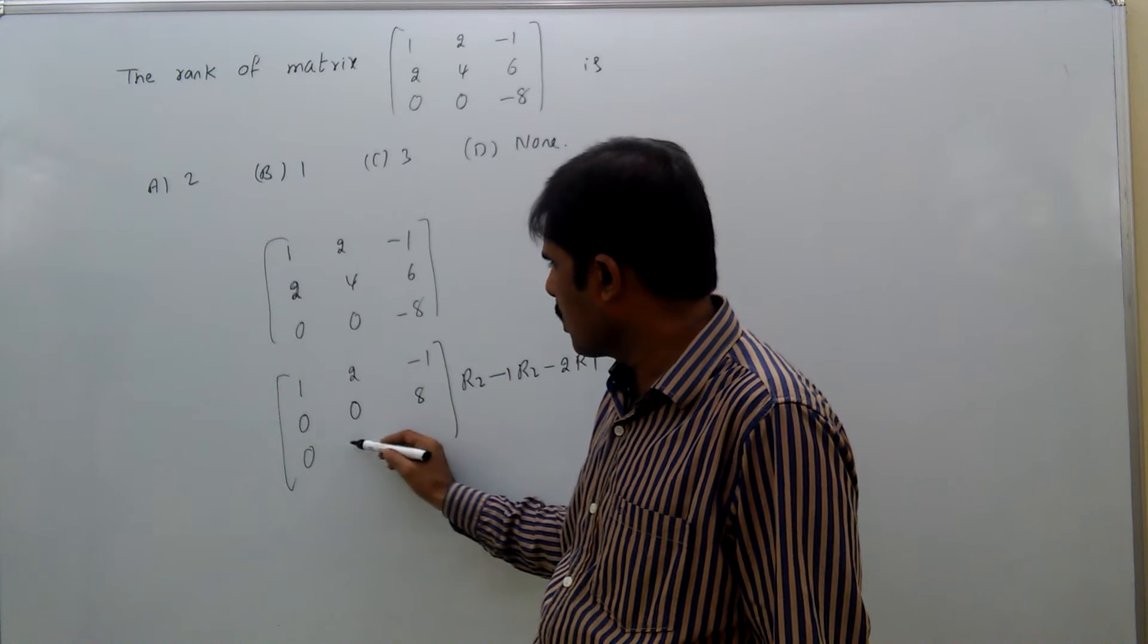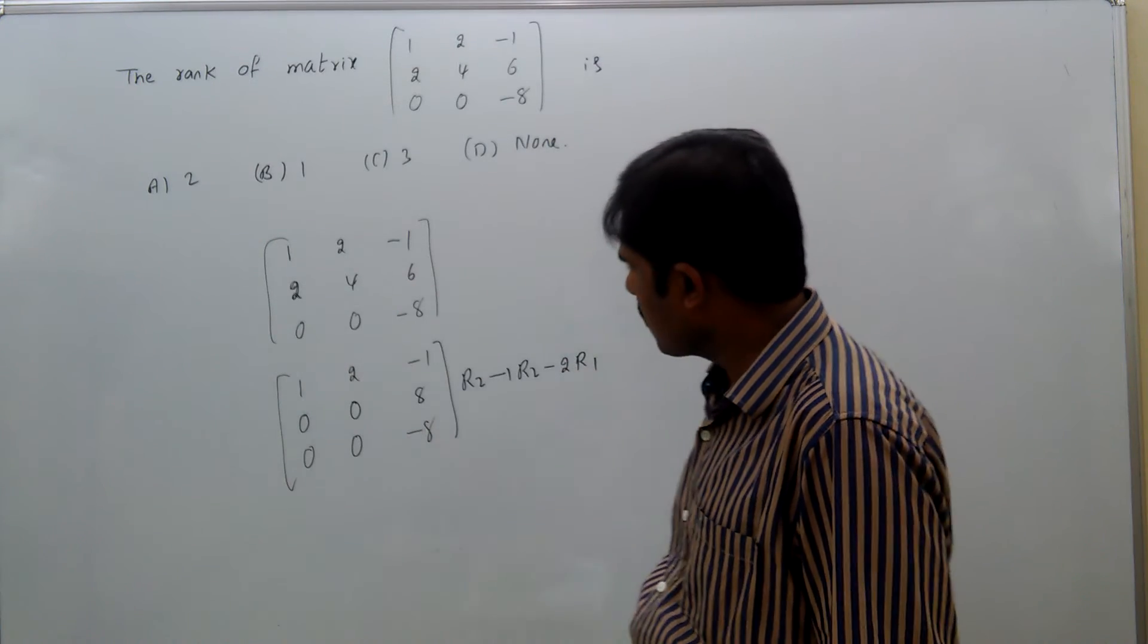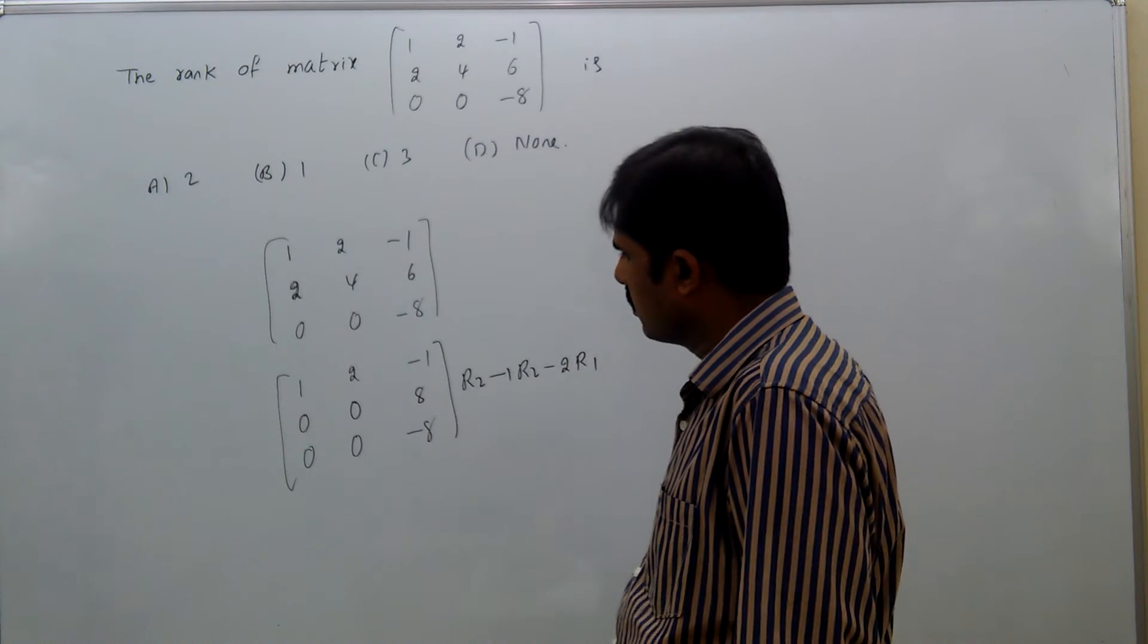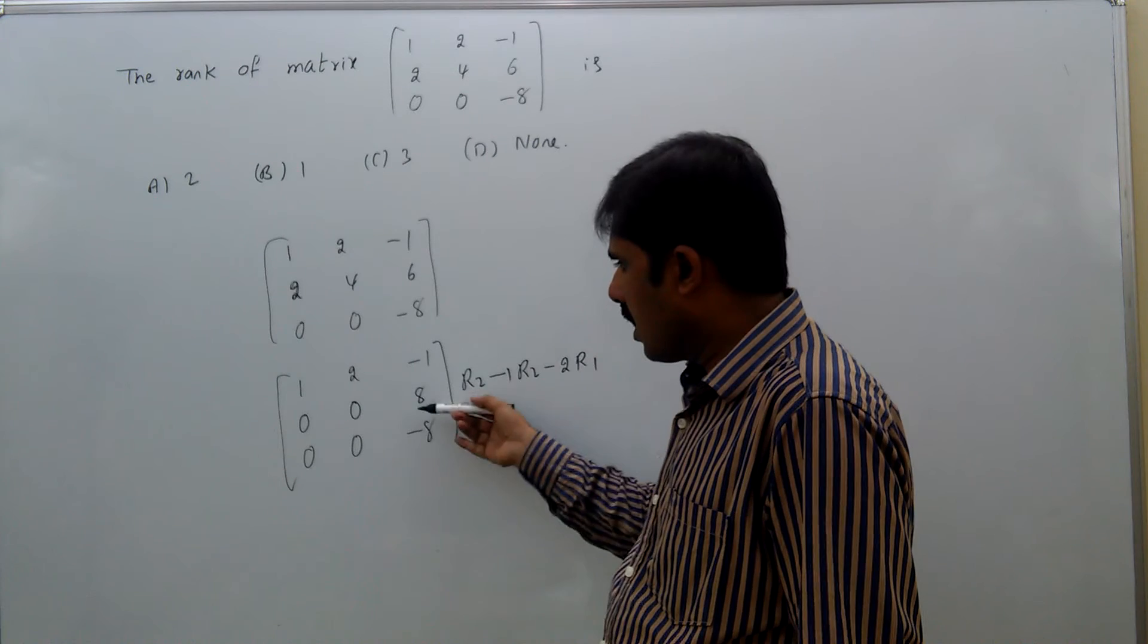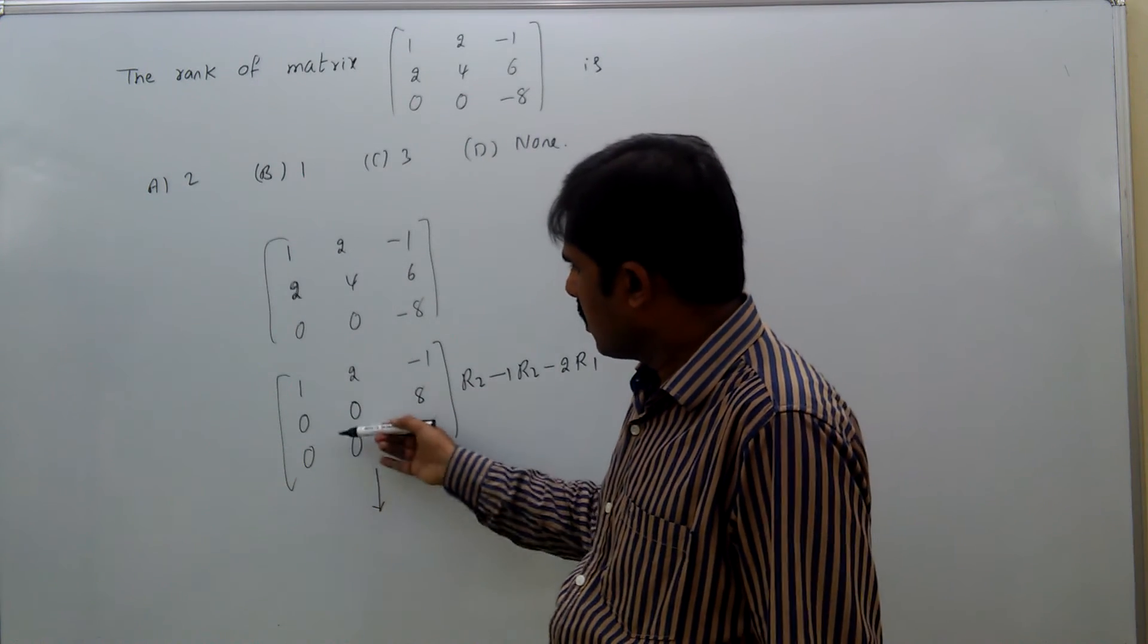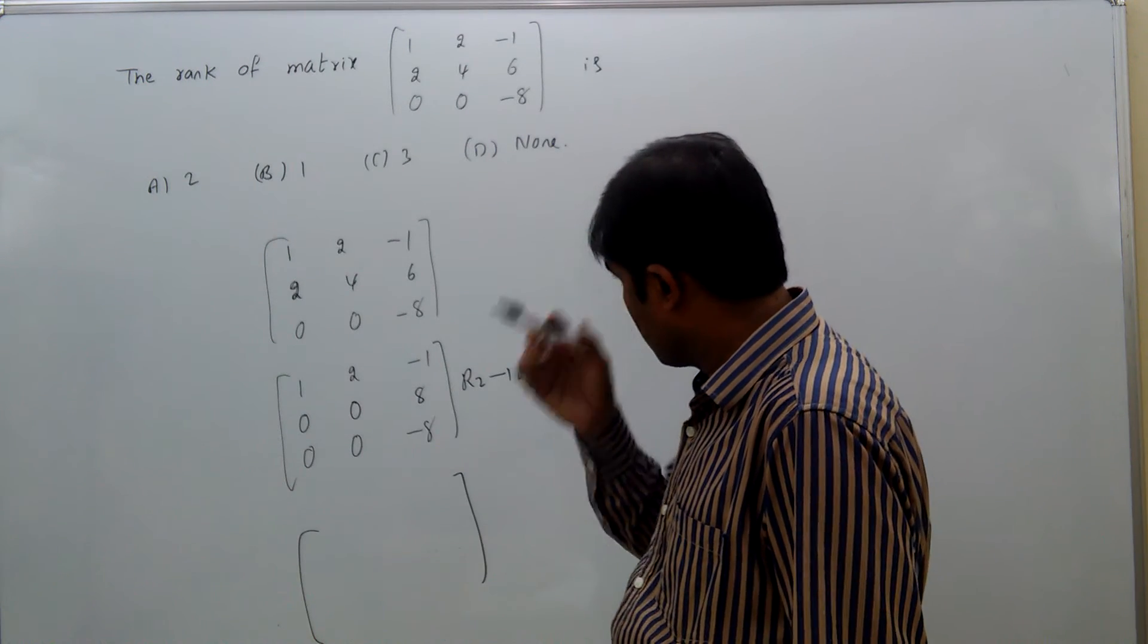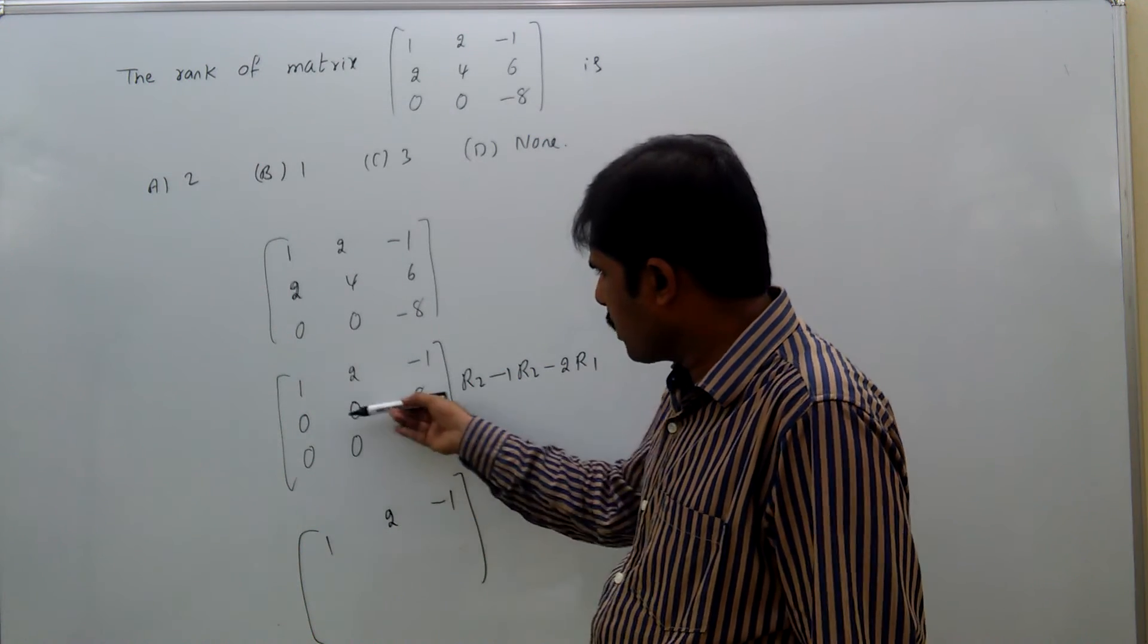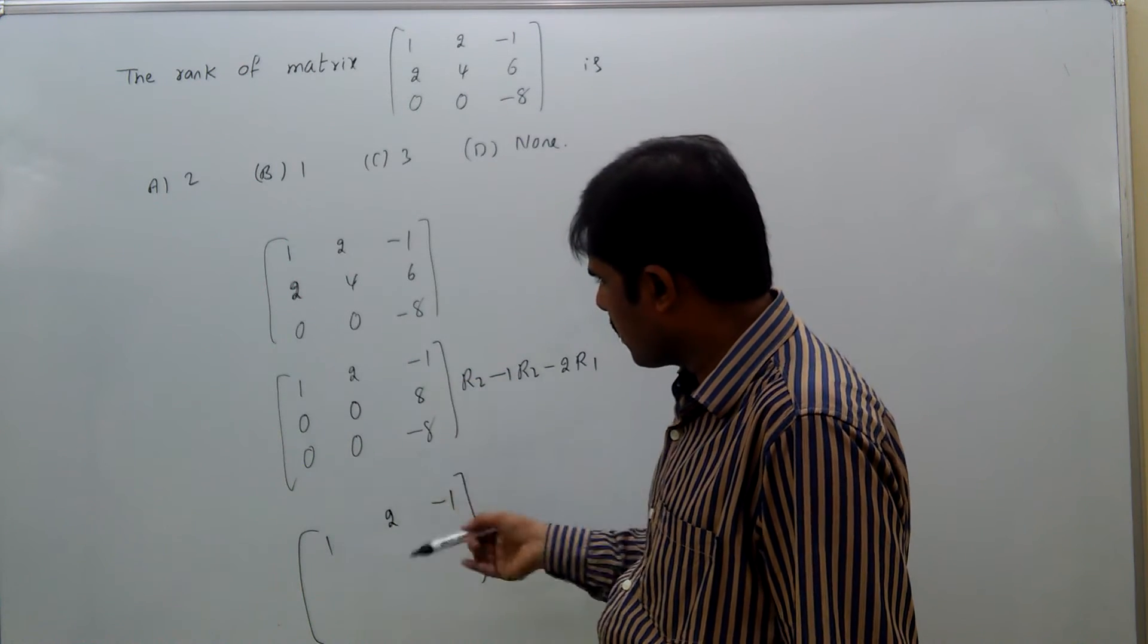Then, third row we will write. First row as this, 1, 2, minus 1. If you see these two rows, they are almost looking the same, similar.